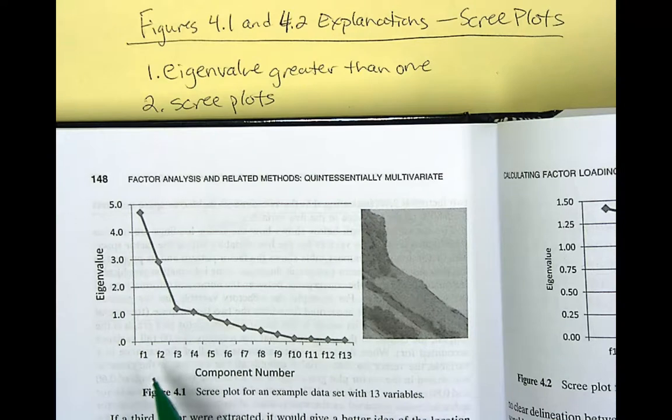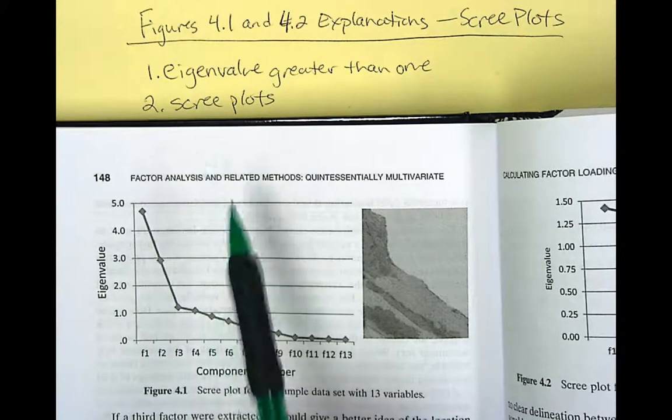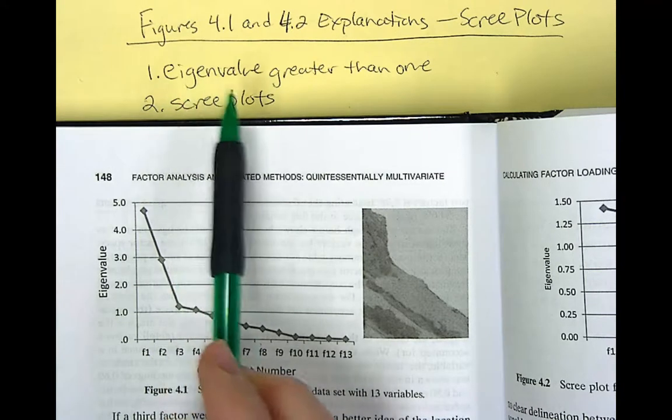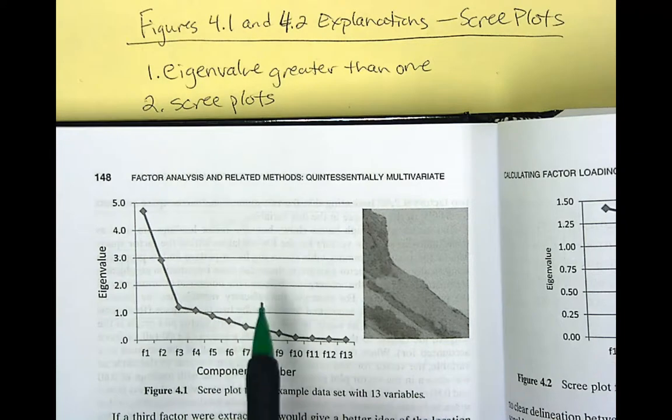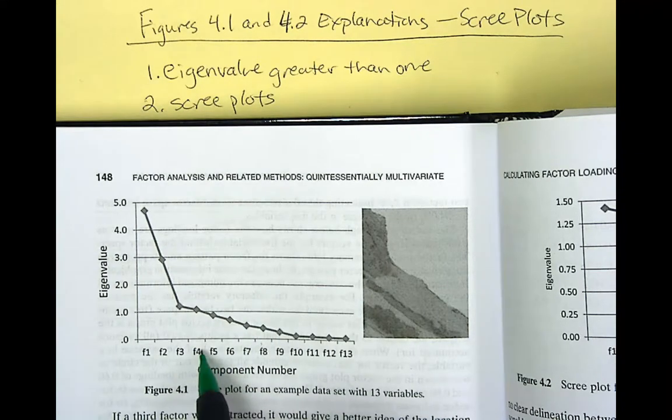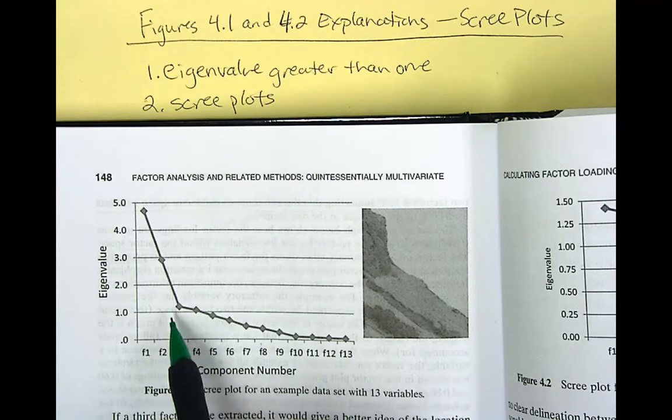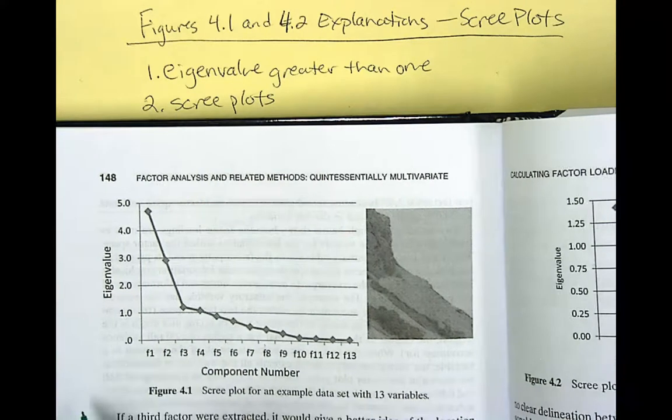So in the criterion, the criterion that we did first, eigenvalue greater than one, this one, you could include four factors because there are four factors that have eigenvalue greater than one.